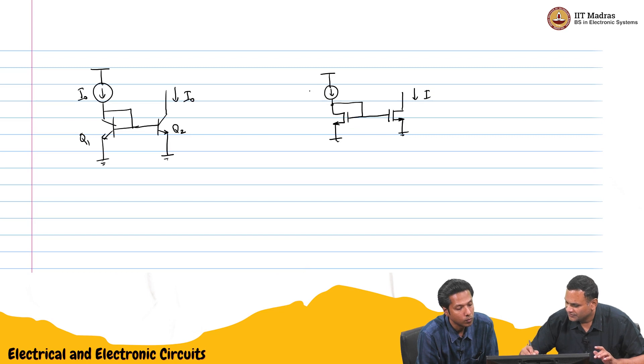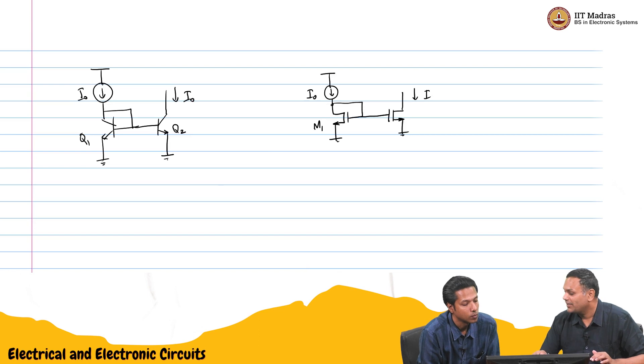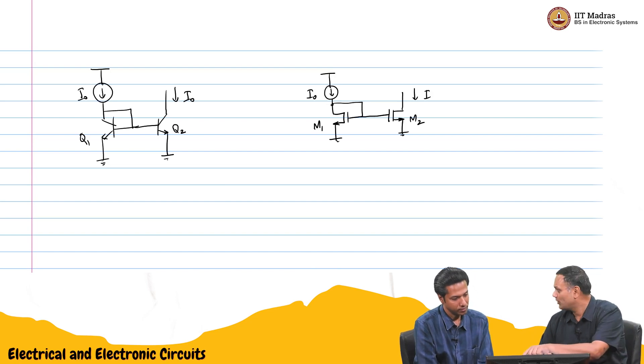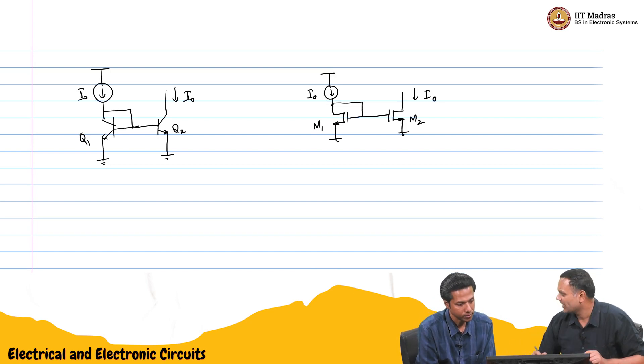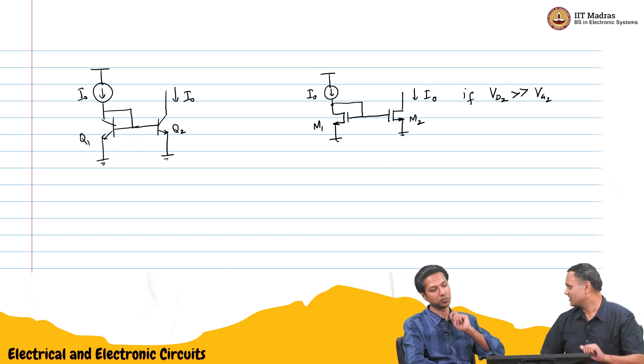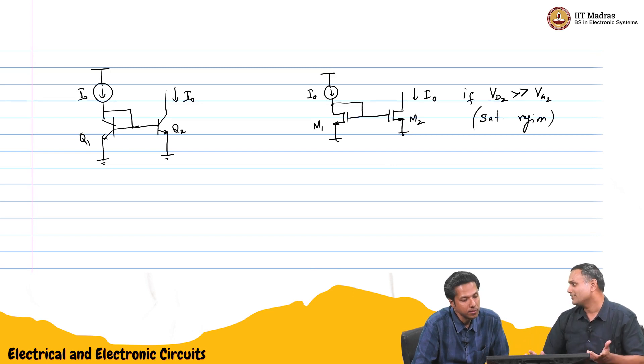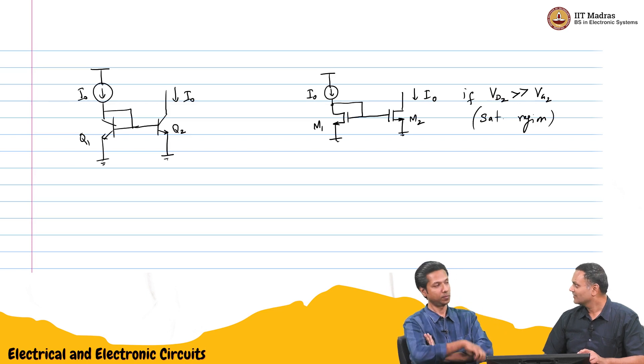If this current is I₀, and for MOSFETs they number it using M, for BJT Q. If M1 and M2 are identical, then this current will be I₀, assuming the drain voltage of M2 is much larger than the gate voltage of M2. It is in saturation region. If one of them goes into linear region, it is not valid.